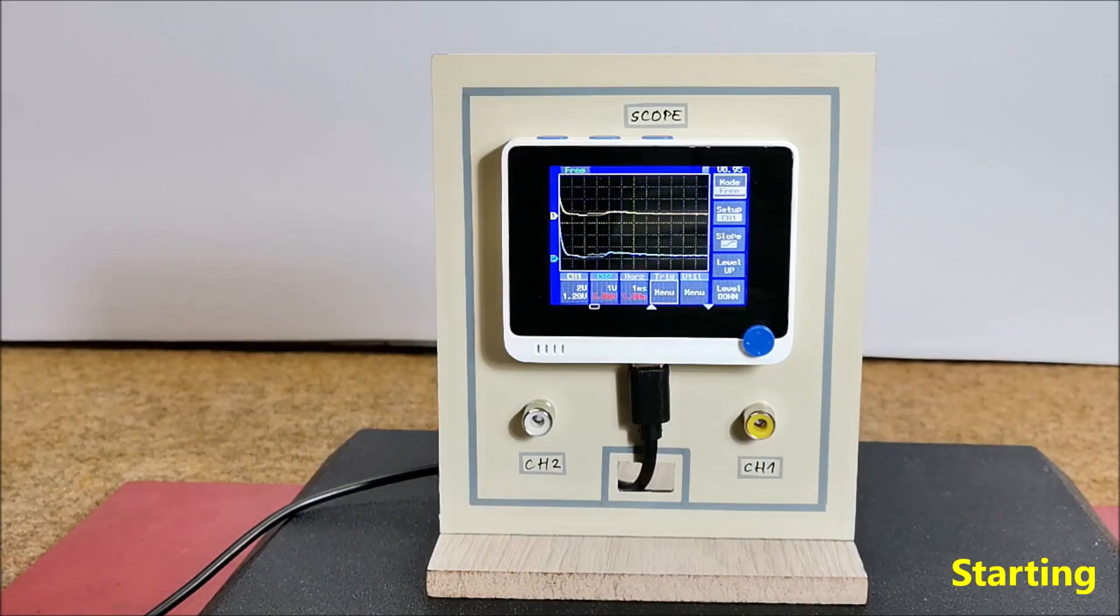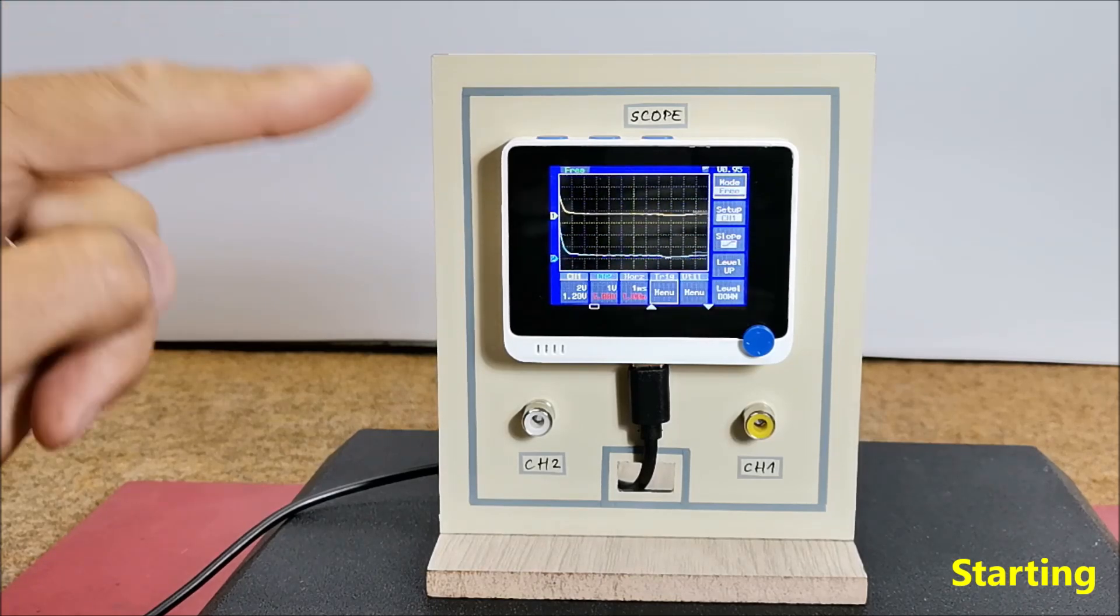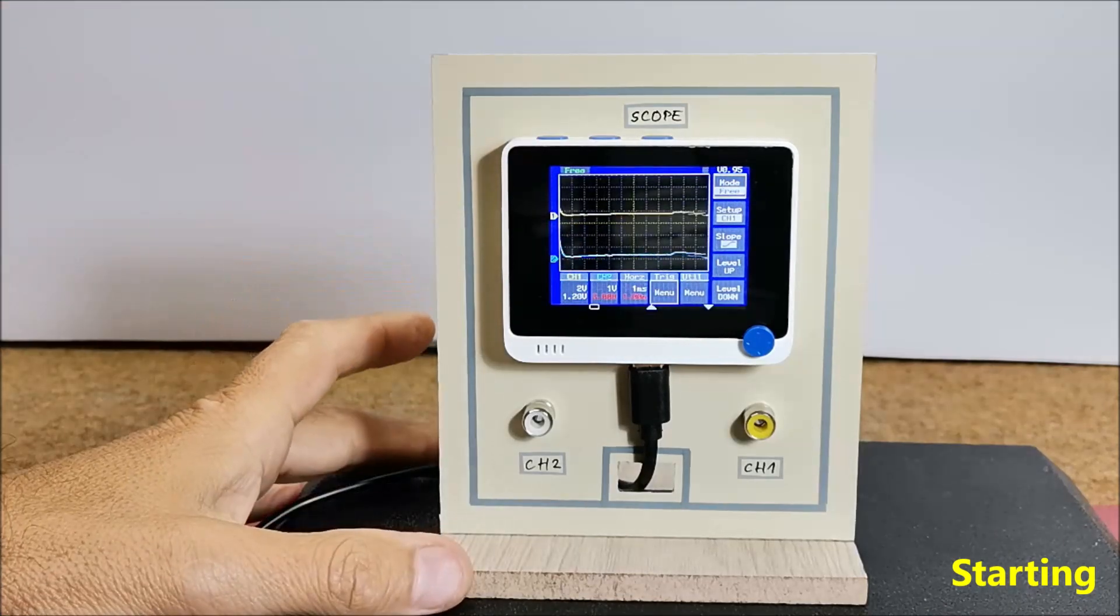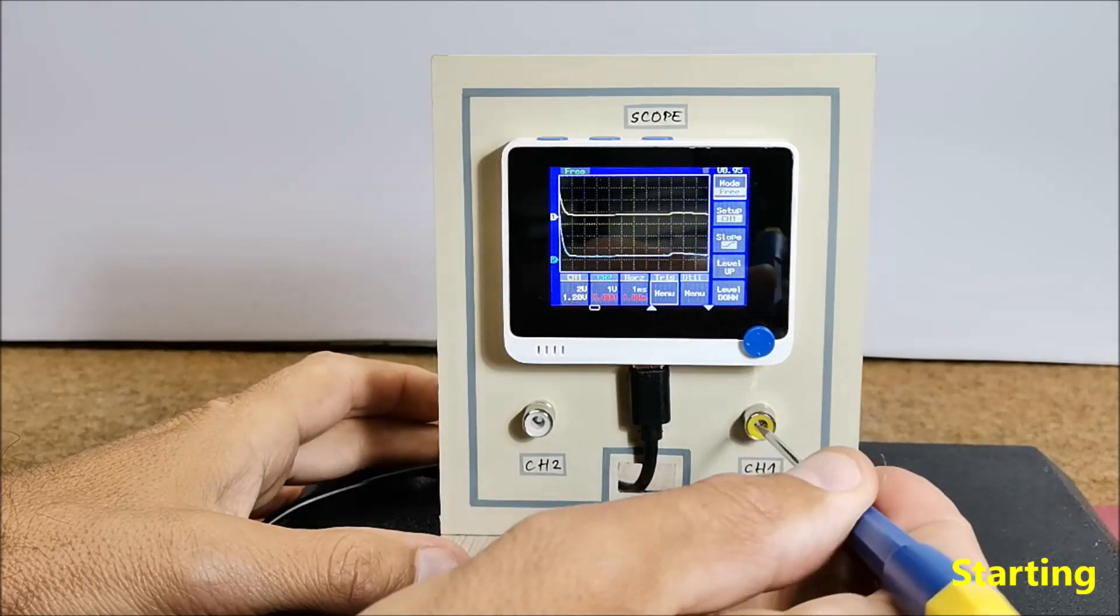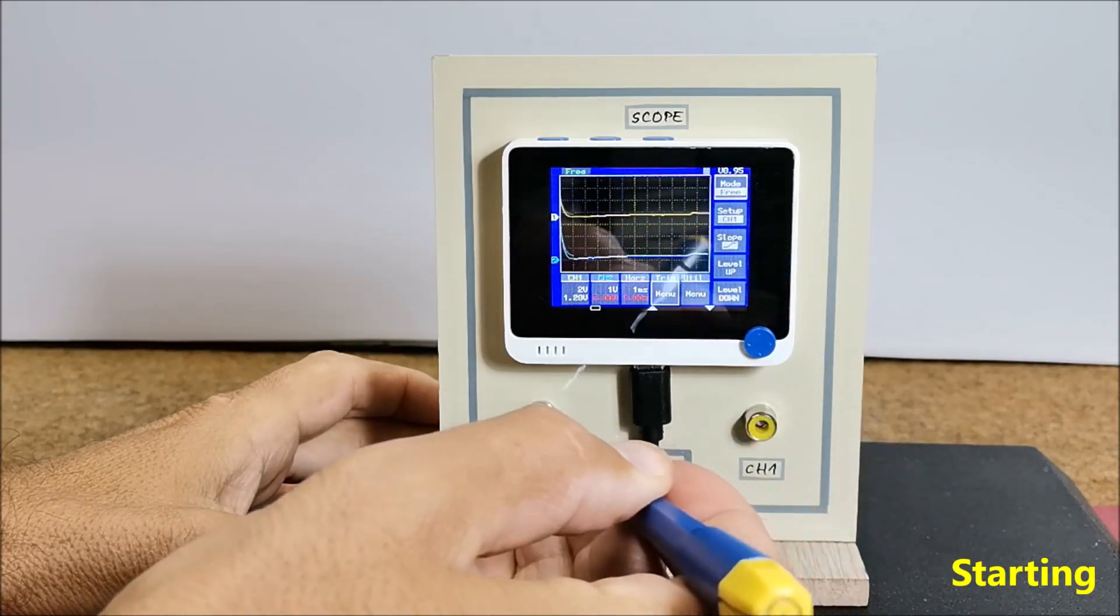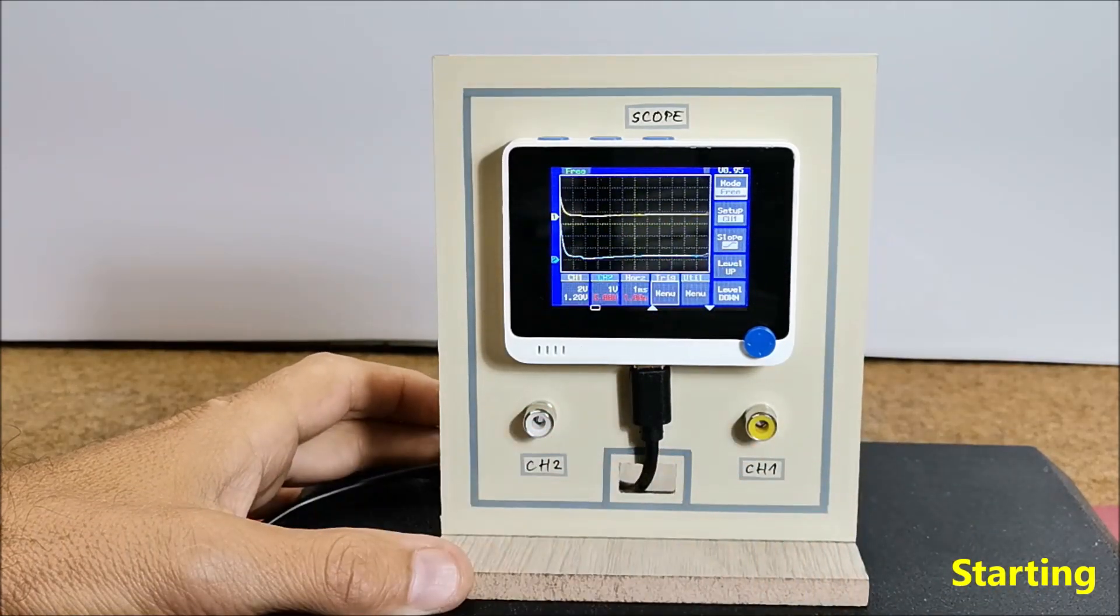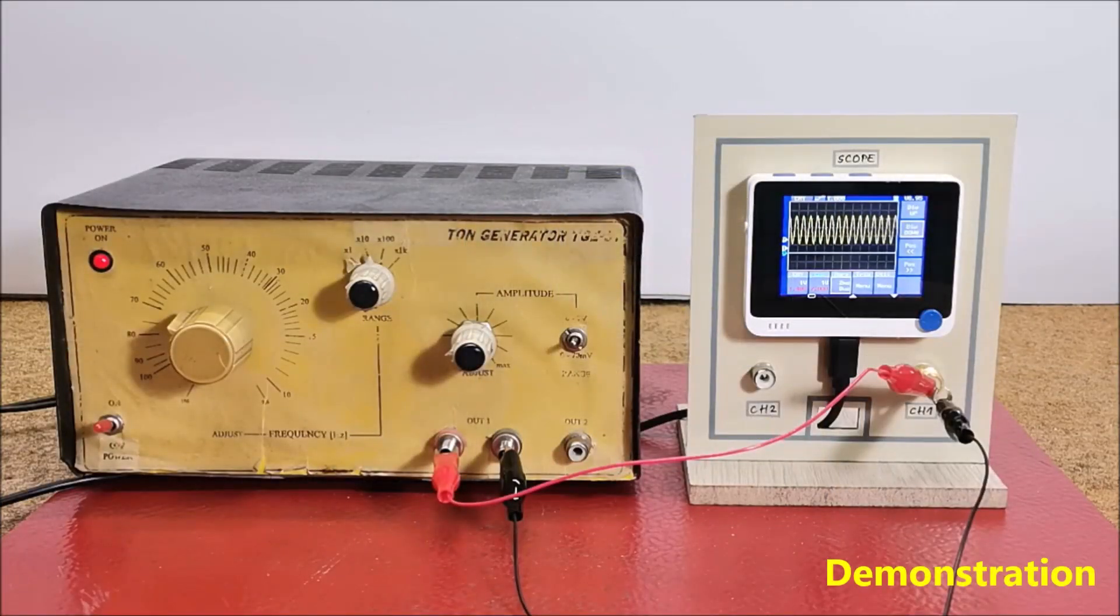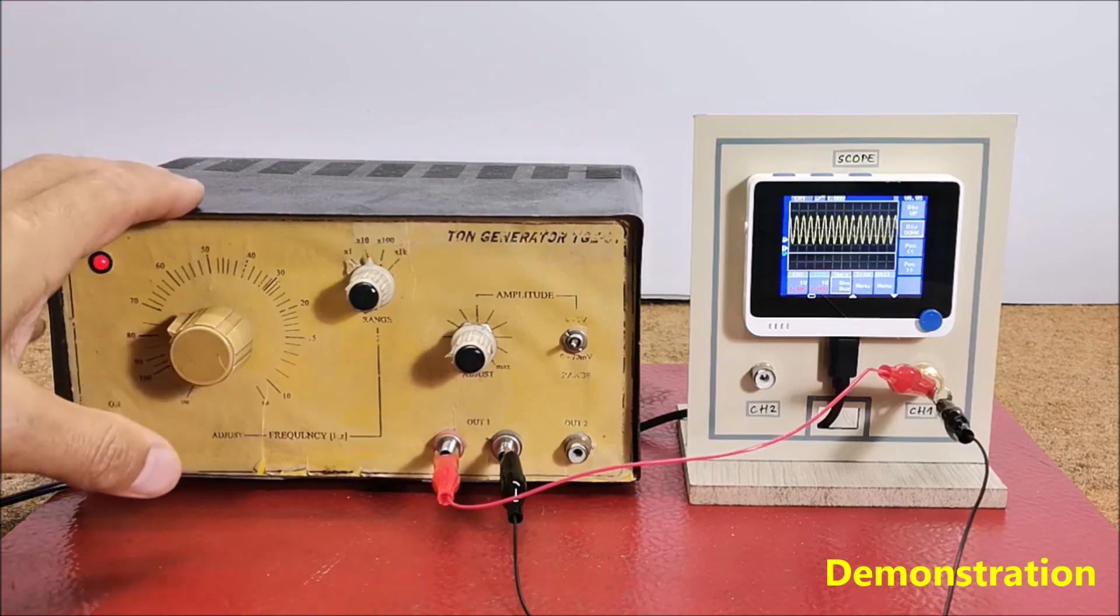Now scope is up and running and we can start testing. The yellow line is Channel 1 and the blue line is Channel 2. For the sinusoidal signal source I will use my old tone generator.